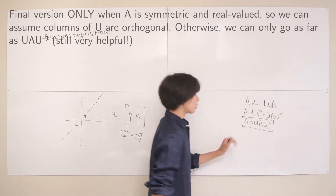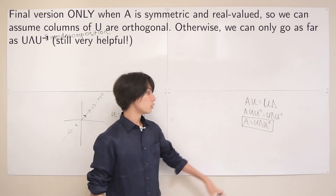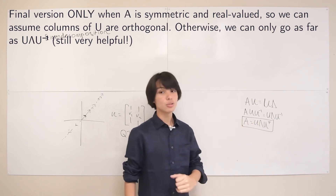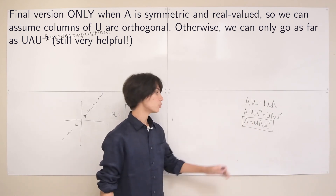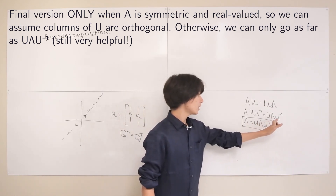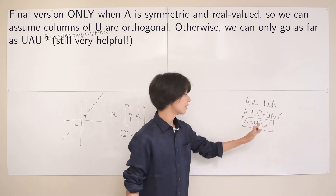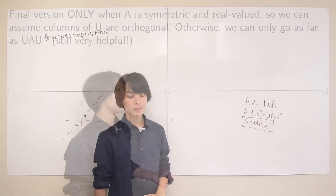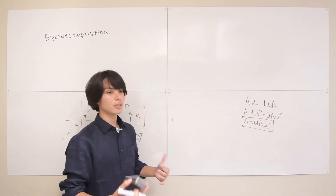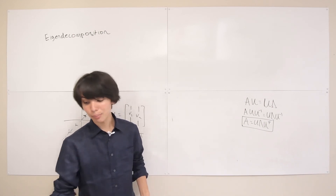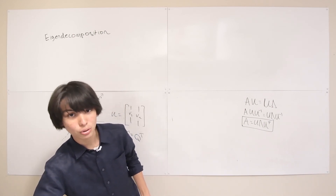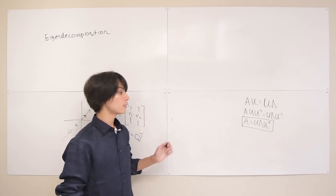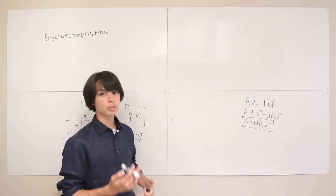That gives us the final form of eigendecomposition: A equals U lambda U transpose. By making the eigenvectors into unit eigenvectors, we simplify A equals U lambda U inverse into this cleaner form.